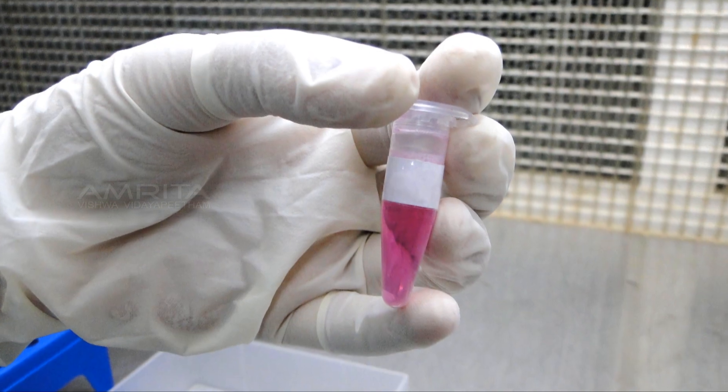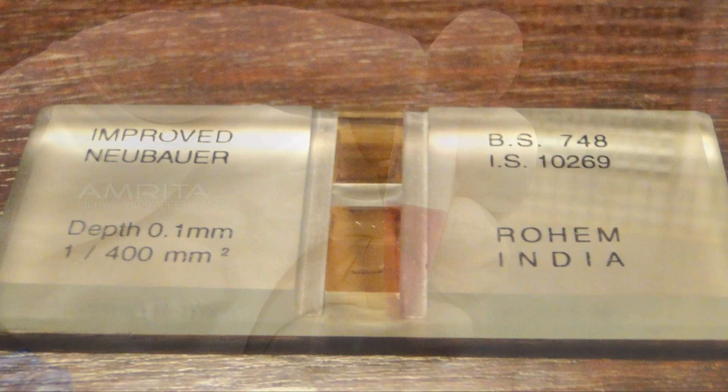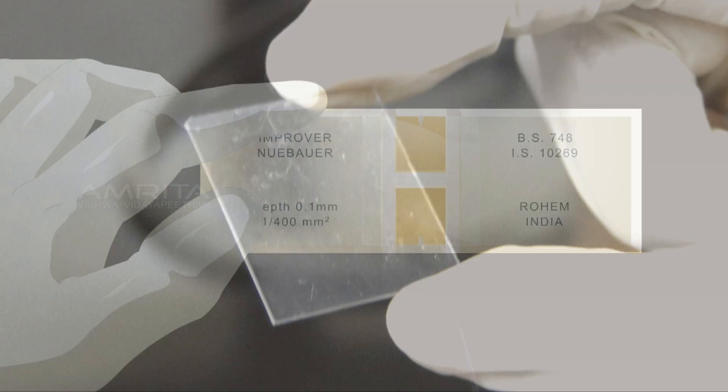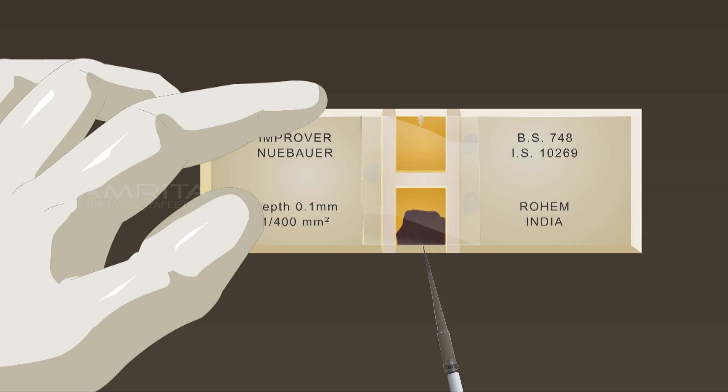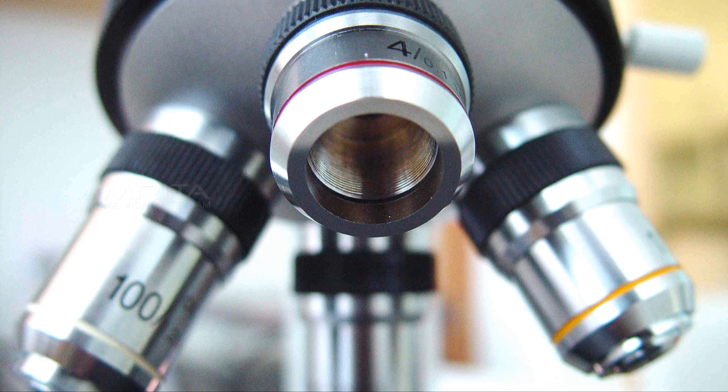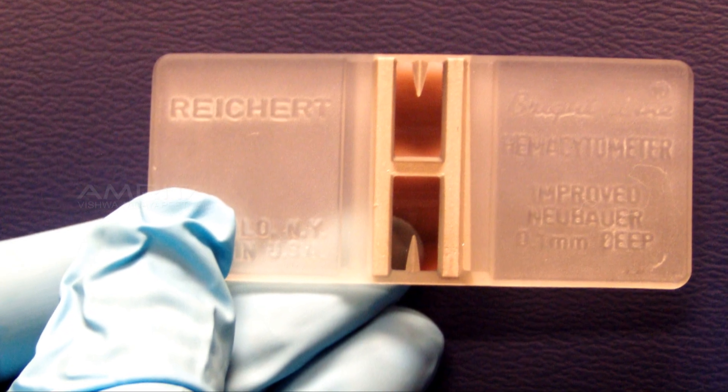A liquid sample containing immobilized cells when placed on the chamber and covered with cover glass, capillary action completely fills the chamber with the sample. Looking at the chamber through a microscope, the number of cells can be determined by counting.